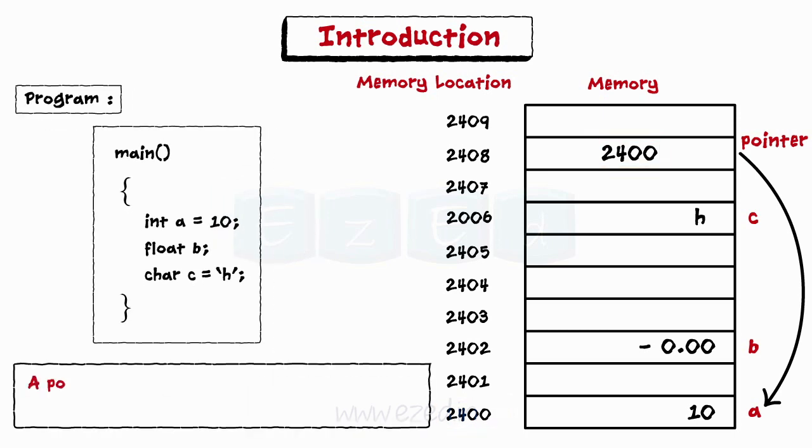Thus, a pointer variable is a variable that contains the memory location of another variable.